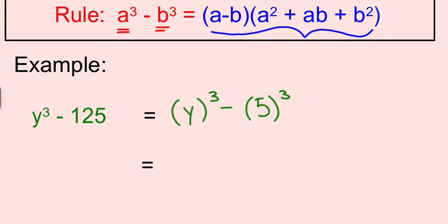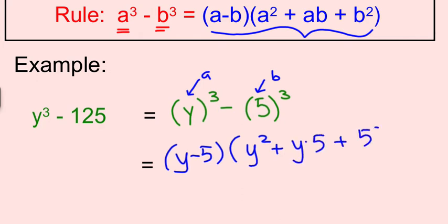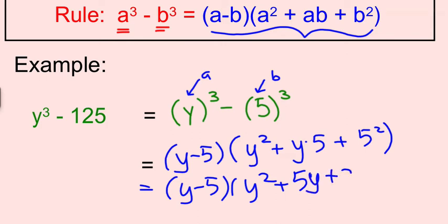Now we throw it into the rule. This will be your A, and that will be your B. So now it's going to be y minus 5, y² plus y times 5 plus 5². y minus 5, y² plus 5y plus 25.